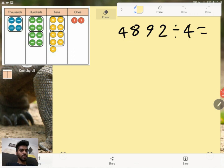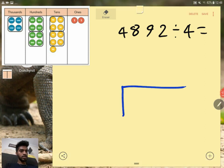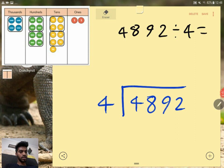Okay, so first we have 4892 divided by 4. So that number needs, so the big number needs to go inside the bus stop 4892 and the four goes outside the bus stop.